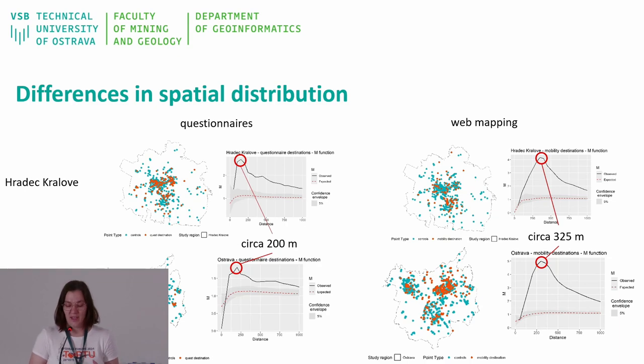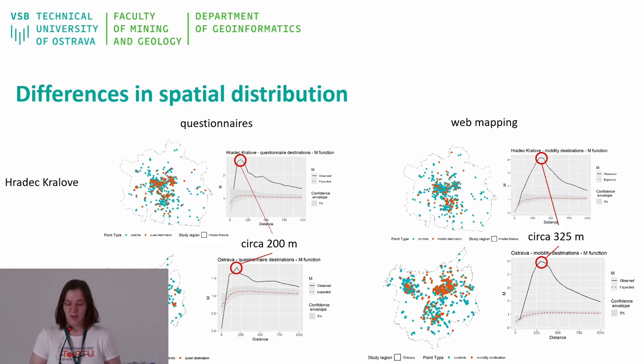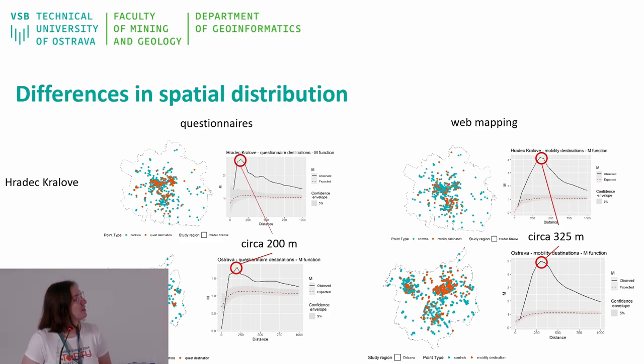This slide illustrates the differences in spatial distribution between the two methods. The maximum clustering for questionnaire responses occurred at 200 meters, while for web-based mapping it was at 325 meters. This difference indicates that the method of data collection can significantly influence the spatial patterns we observe.